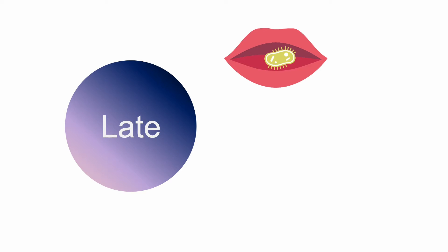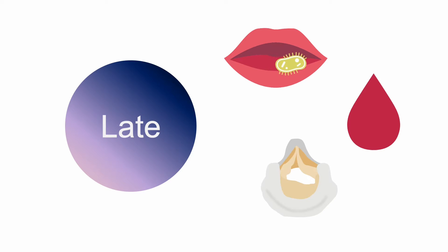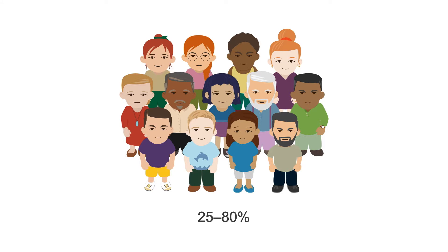Late PVE occurs when bacteria, fungi, or other germs from another part of your body, such as your mouth, spread through your bloodstream and attach to the prosthetic valve. This is observed in 25–80% of patients with PVE, with the most frequent causes being dental procedures, urological infections, and urinary catheters.